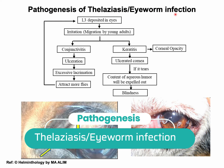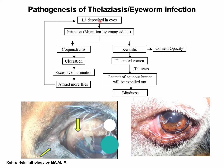In pathogenesis, the L3 infective stages released by flies into the eyes of final hosts cause lesions due to the serrated cuticle of the worms and their migration. As a result, host antibodies are produced and keratitis develops. Due to these pathological conditions, excessive lacrimation occurs. This excessive lacrimation further attracts more flies, which in turn deposit more L3 larvae into the eyes.